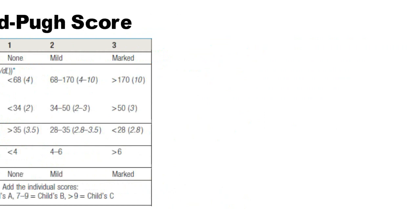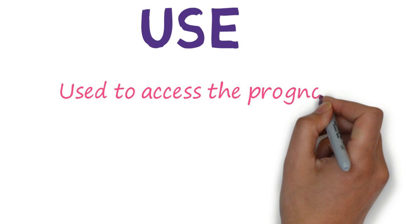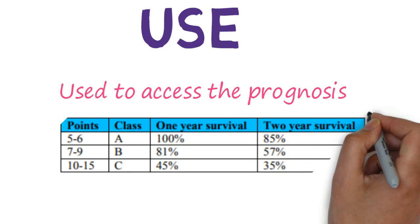The Child-Pugh score is used to assess prognosis, as shown in the chart below.